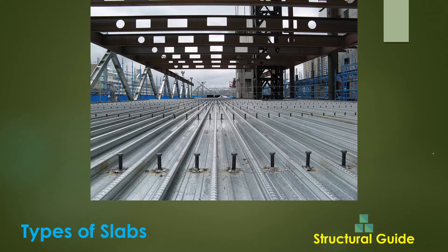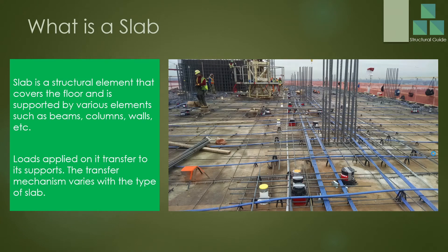Let's discuss about slab types. What is a slab? A slab is a structural element that covers the whole floor area and it is supported by various elements like beams, columns, and walls. The supported structural element for the floor is the slab, which rests on beams, columns, and walls.